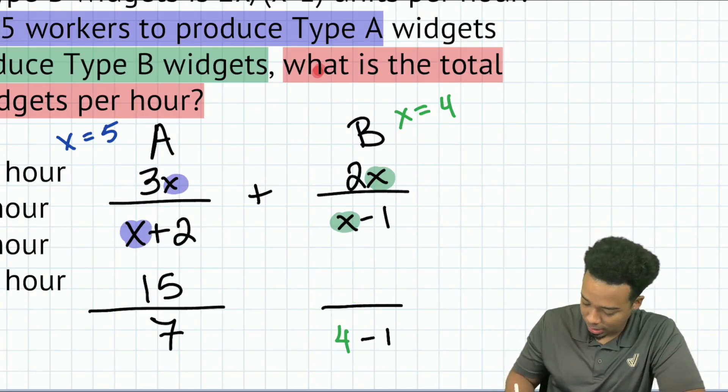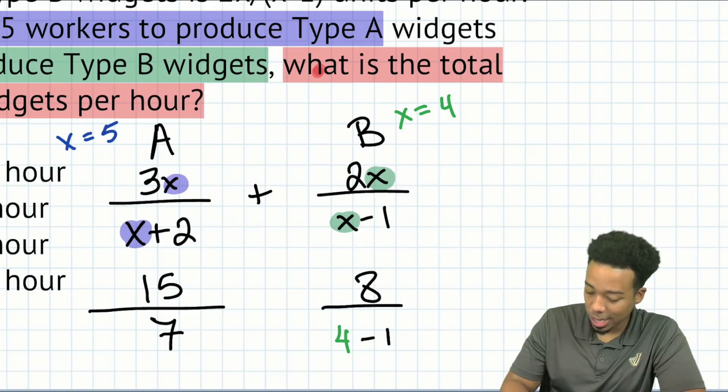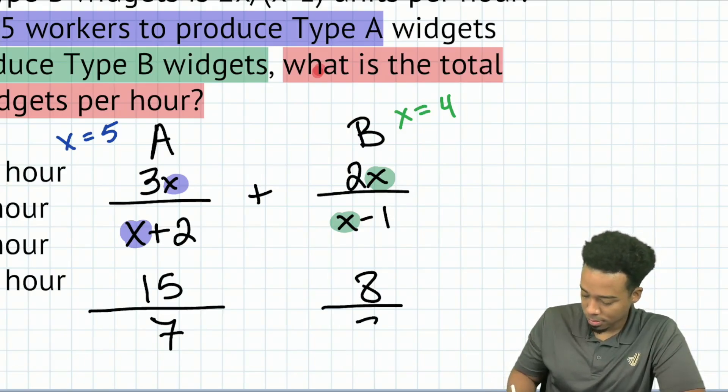So two times four, that'll be eight. Four minus one, that's going to end up being three. Nice and easy. We're good there. And again, we're still adding these.